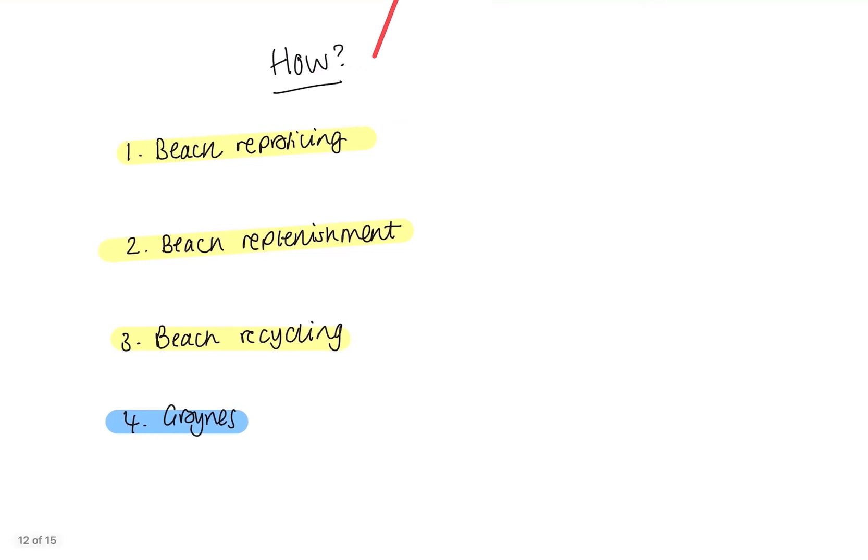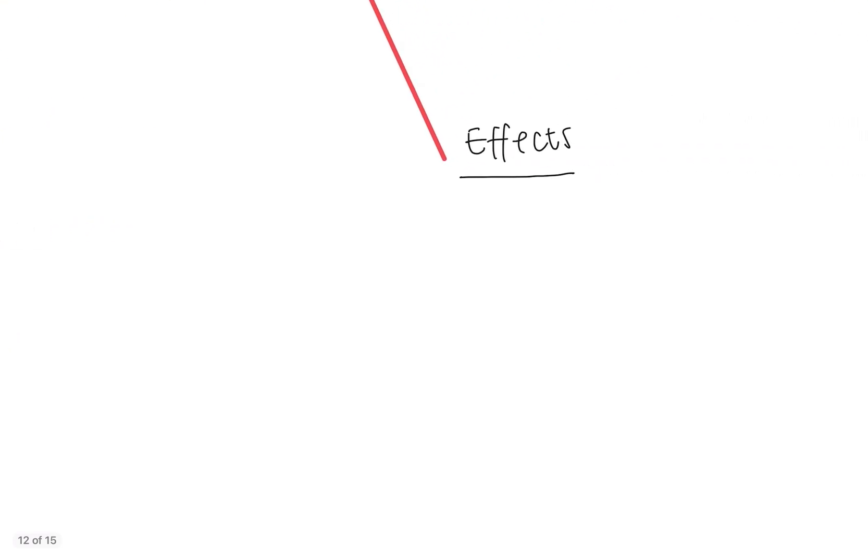If we've got all of these management techniques in place, we want to think about whether there are any effects that have happened as a result. So we can break down these effects. Positively, we could say they're quite pleasing, especially the soft engineering for residents and tourists—it looks good, so that would be a positive. Remember, if it looks good for tourists, people are more likely to go there on holiday.